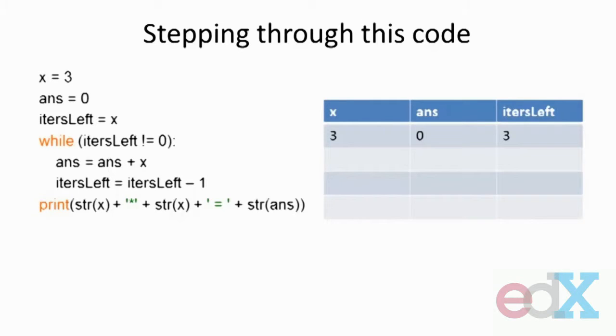Let's see if this does the right thing. So here's my code. And let's just walk through this. We won't run it on idle. We'll just walk through it. Initially, x is bound to three, answer is bound to zero, and itersLeft is bound to three.